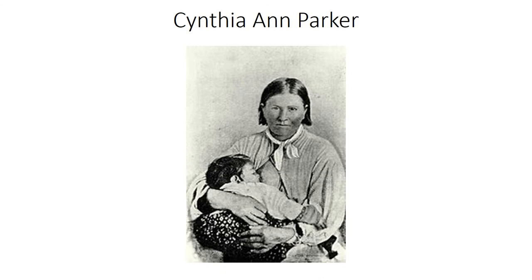When she was of age, Cynthia Ann married a Comanche warrior named Peta Nakona, which means Lone Wanderer. He was the son of a famous Comanche chieftain named Iron Jacket, known for wearing an old piece of Spanish armor. Peta Nakona and Nadua had three children: the oldest was a son named Quanah, then another son named Pecos — or Peanut — and then a much younger daughter named Topsana, or Prairie Flower.